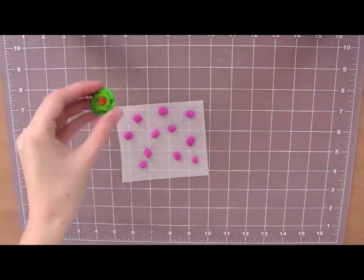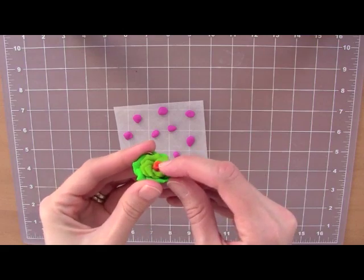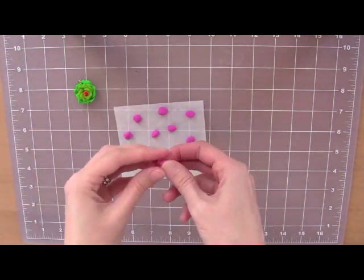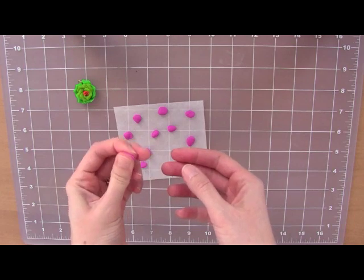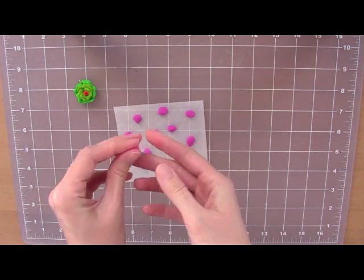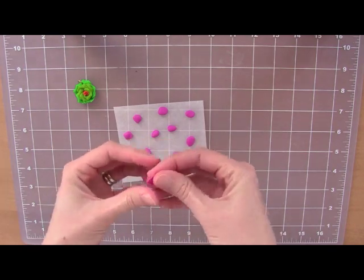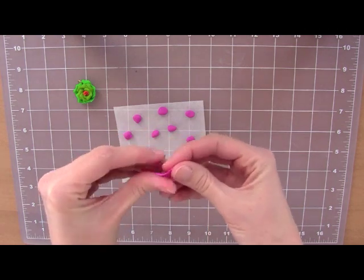Using this green rose as our example, we want to first start with our center. So we're going to take one of the little balls of clay we have here and really squish that down well. It's important that the clay be really soft and pliable.